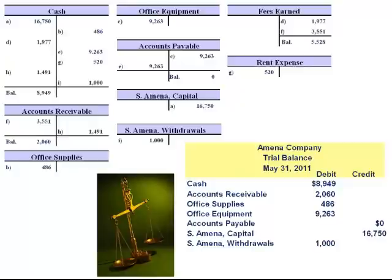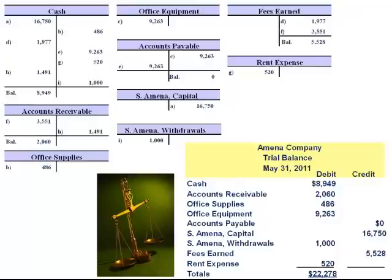The withdrawal account has a normal debit balance as its purpose is to decrease equity. Finally, we list the income statement accounts — first the revenues: fees earned with its credit balance of $5,528, which increases equity. And then rent expense with its debit balance of $520, as debits decrease equity. The total of our debits must equal the total of our credits: $22,278 in debits and $22,278 in credits.